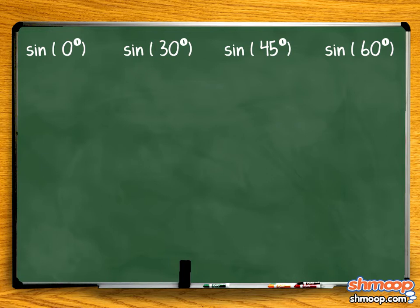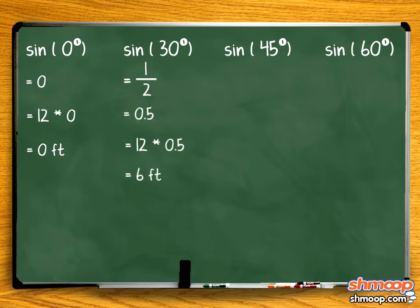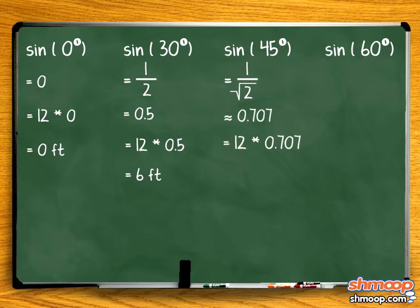Doing some calculations, we find that the sine of zero degrees is zero. The sine of 30 degrees is one-half, or 0.5. The sine of 45 degrees is one over the square root of two, or about 0.707. And the sine of 60 degrees is the square root of three over two, or about 0.866.